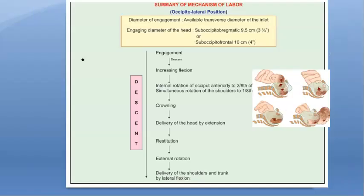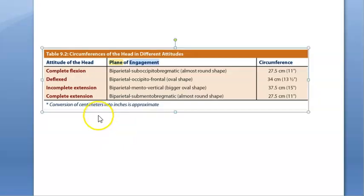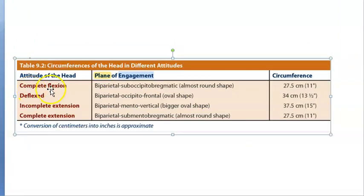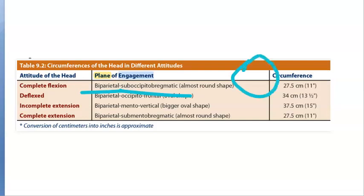Looking at the summary of the mechanism of labor, the first step listed is engagement. The diameters involved in the plane of engagement include the biparietal and suboccipitobregmatic diameters. Together, the biparietal and suboccipitobregmatic diameters form the plane of engagement, which is almost circular in shape.